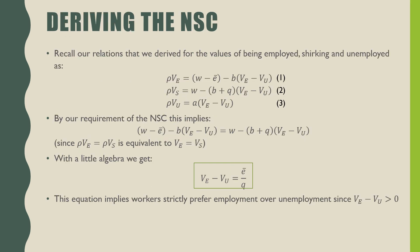In terms of deriving the no shirking condition, recall the relations we derived previously for the values of being employed, shirking, and unemployed as equations 1, 2, and 3. By the requirement of the no shirking condition, this implies that we equate equations 1 and 2, since rho times VE equals rho times VE is equivalent to our requirement. With a little bit of algebra, we learn that the difference between these two is equal to E-bar over Q — the effort put in over Q, which is the detection rate. This equation implies that workers strictly prefer employment over unemployment, since this difference is positive.